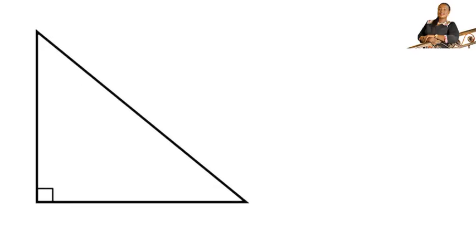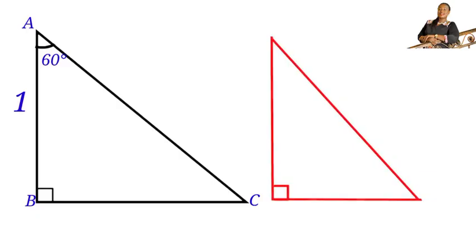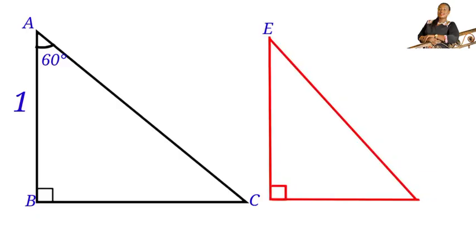Let us look at these two right angle triangles. Triangle ABC has angle BAC of 60 degrees and a height of one unit. The other red right triangle is triangle EDC, with angle DEC of 45 degrees and a hypotenuse of the square root of 3.